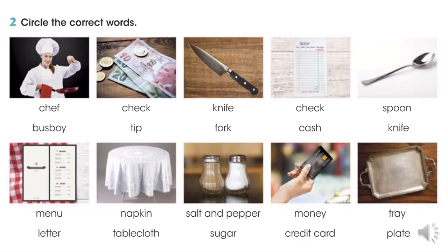Ok students, we are going to start with the class. En esta clase haremos un breve repaso de lo aprendido en la unidad 7. Vamos a empezar la clase, abrimos nuestros libros y nos ubicamos de frente en la página 87. Vamos a empezar por la actividad número 2.